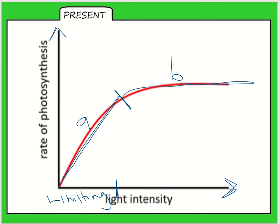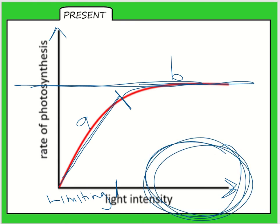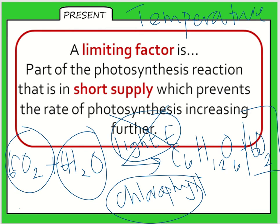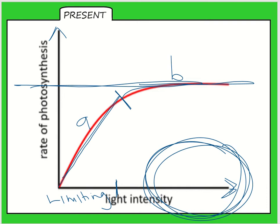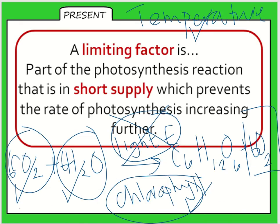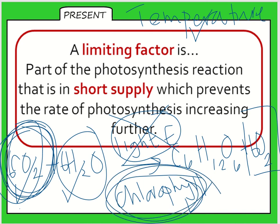When we get to point B where it plateaus or levels off, that means that the rate is not increasing or decreasing. We've still got lots of light, so that must be because of another reason. If it's not light then it's either going to be carbon dioxide concentration, water availability, chlorophyll concentration or temperature. If in that exam question you've been told that we're growing tomatoes in a greenhouse and the greenhouse is at the correct temperature and there's plenty of water available, then you would have to think that it's probably the carbon dioxide or the chlorophyll concentration. So that's what a limiting factor is.